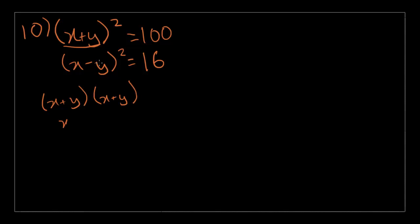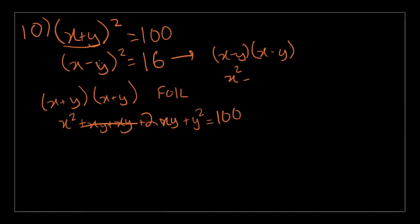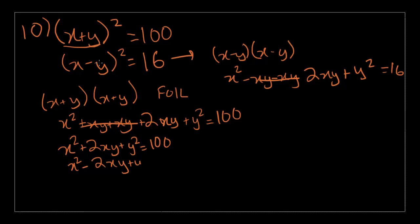So you get x squared, then you use the FOIL method, first outside, inside, last. So, plus xy plus xy, then you could cross this off and call it 2xy. So x squared plus 2xy plus y squared. This is equal to 100. Now, what if we expand this one? It's x minus y times x minus y. So it's x squared minus xy minus xy. So you cross this off and it's minus 2xy plus y squared, which equals 16. So now we have two separate equations. x squared plus 2xy plus y squared is equal to 100. And you also have x squared minus 2xy plus y squared is equal to 16.